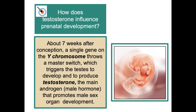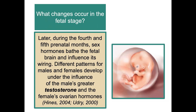How does testosterone influence prenatal development? About seven weeks after conception, a single gene on the Y chromosome throws a master switch, which triggers the testes to develop and to produce testosterone — the main androgen, or male hormone, that promotes male sex organ development. Later, during the fourth and fifth prenatal months, sex hormones bathe the fetal brain and influence its wiring, with different patterns developing for males and females.